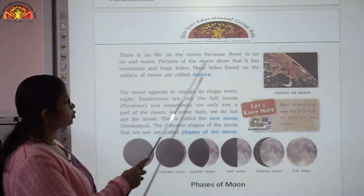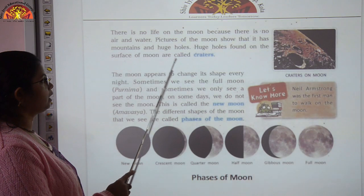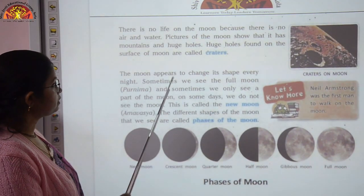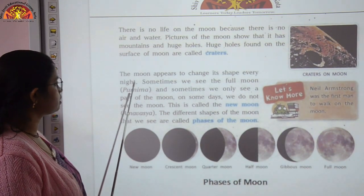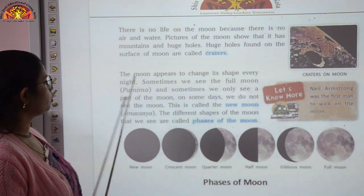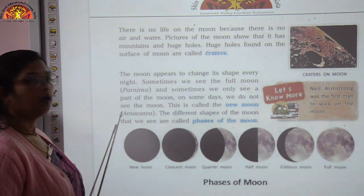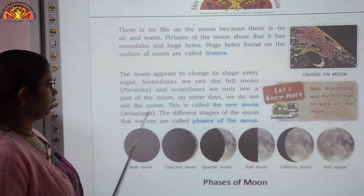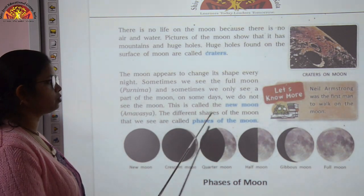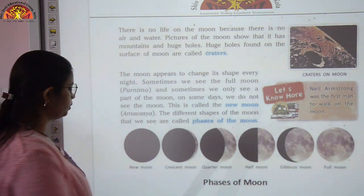Huge holes are found on the surface of the moon. These holes are called craters. The moon appears to change its shape every night. Whenever there is a full moon, it is called Purnima. Whenever there is no moon, it is called new moon or Amavasya. The different shapes of the moon that we see are called phases of the moon.